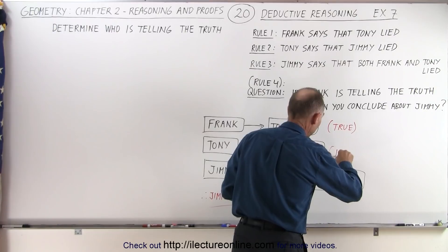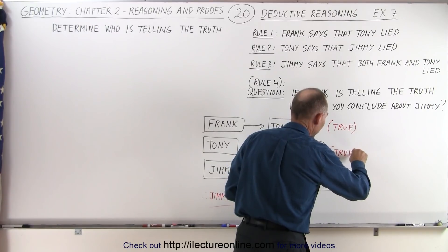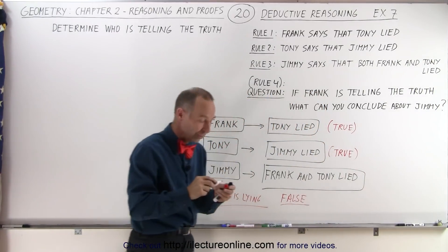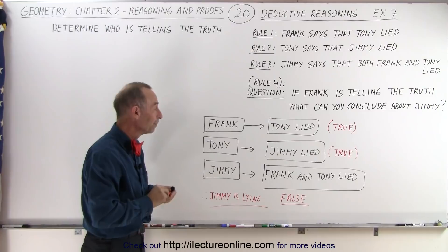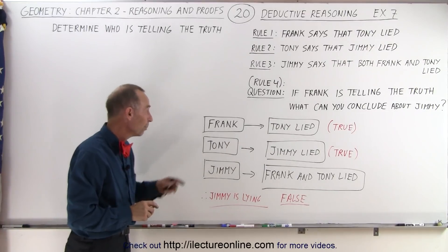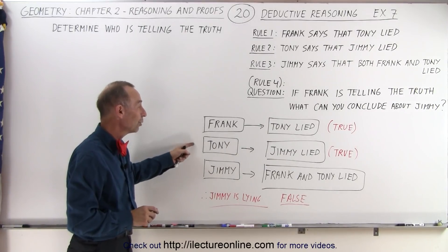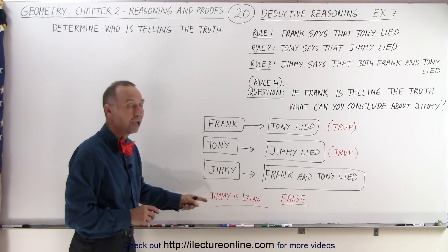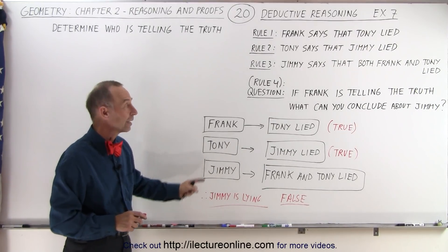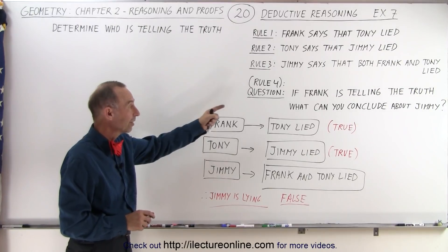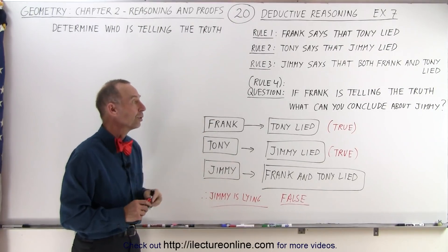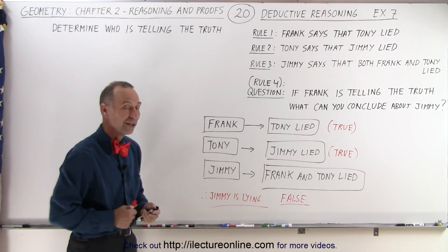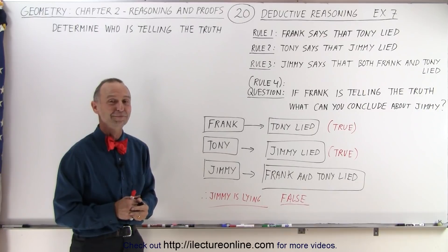And they're not asking us if that's the case, but at least we can conclude that one as well. So both Frank and Tony are telling the truth, and Jimmy appears to be lying on the basis that we now know that Frank is telling the truth. And that's how it's done.